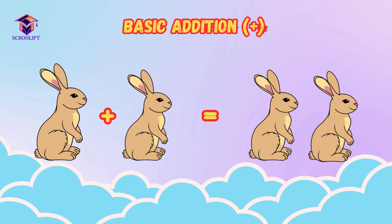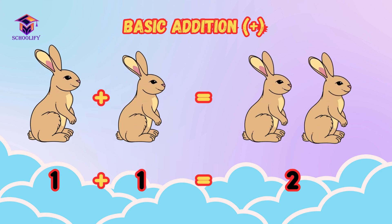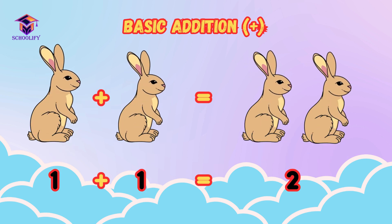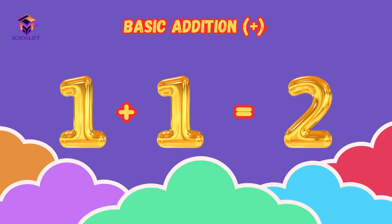One rabbit plus one rabbit is equal to two rabbits. It means one plus one is equal to two.